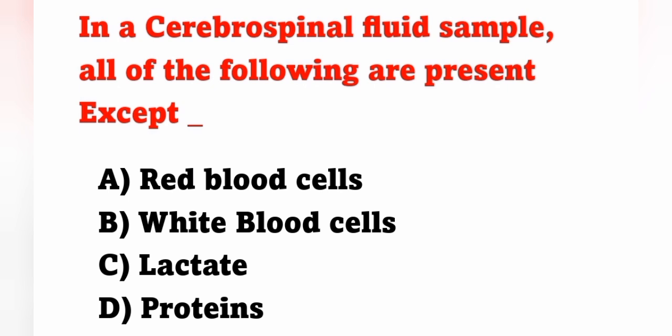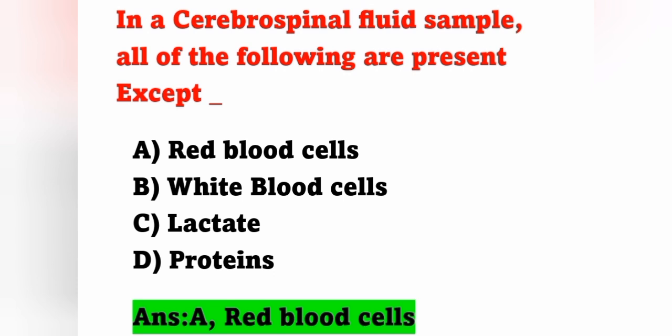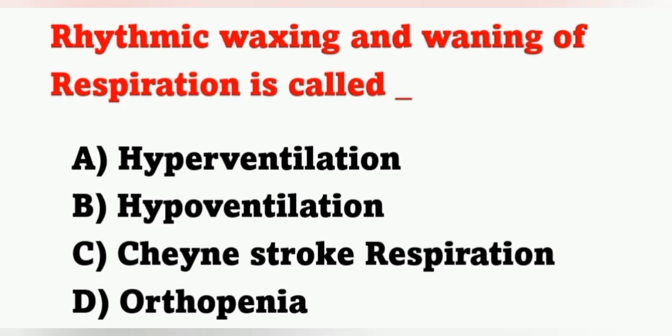Next question: in a cerebrospinal fluid sample, all of the following are present except — options: A) red blood cells, B) white blood cells, C) lactate, D) protein. As discussed, CSF is clear and colorless. White blood cells, lactate, and protein are present, but RBCs are not. Option A — red blood cells — is the correct answer.